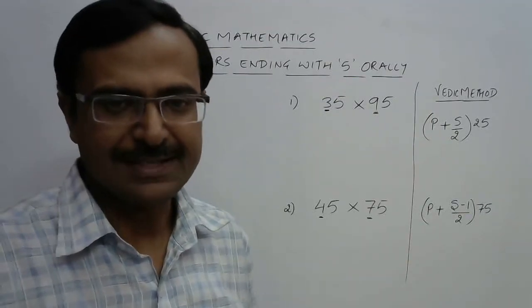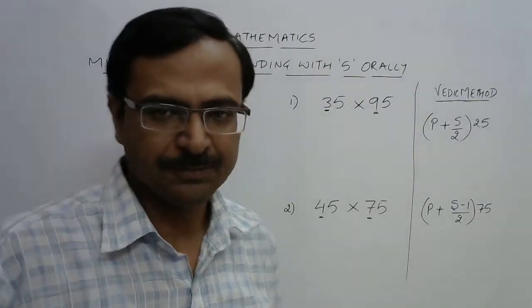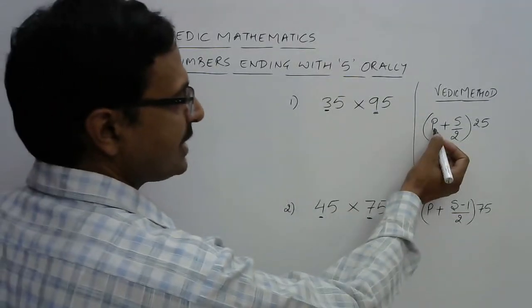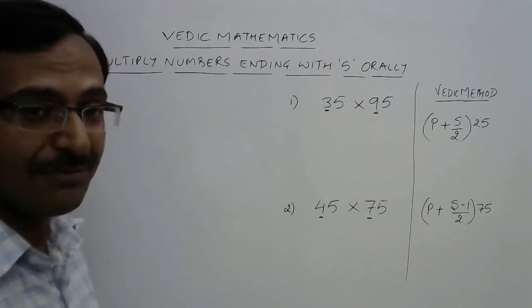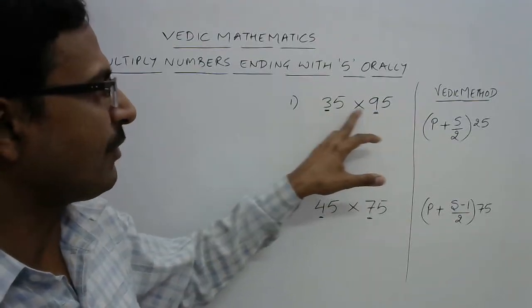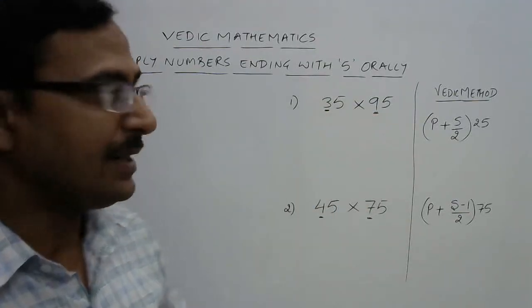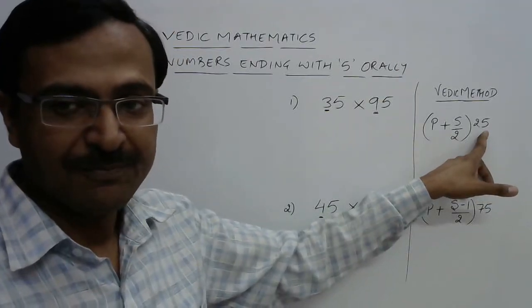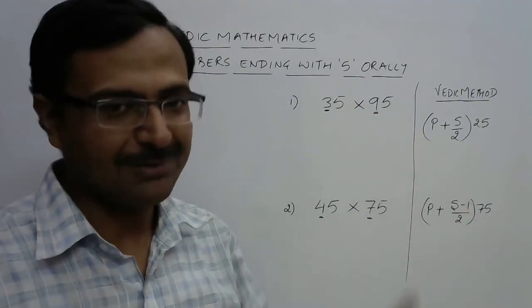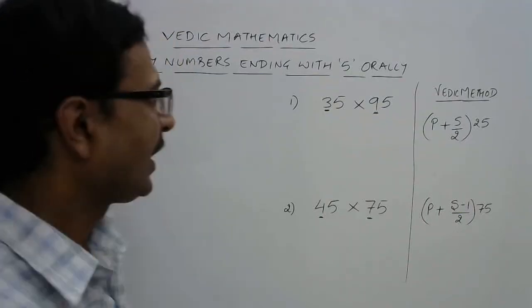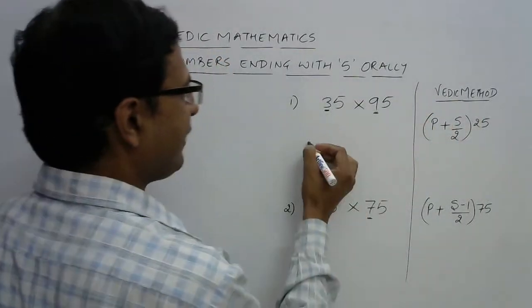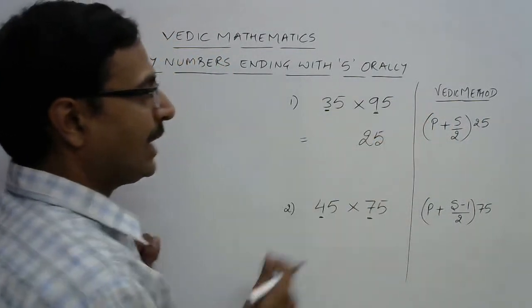So let's see how we can master this skill. Now see, this is 35 × 95. The first step is to see the product of the digits apart from 5. See, we don't consider 5s in this product. So whenever we have the sum of digits as even, then our answer will end with 25.